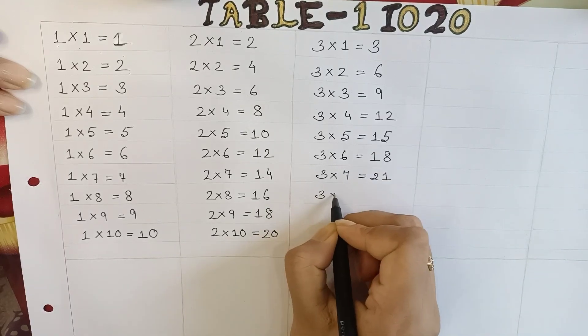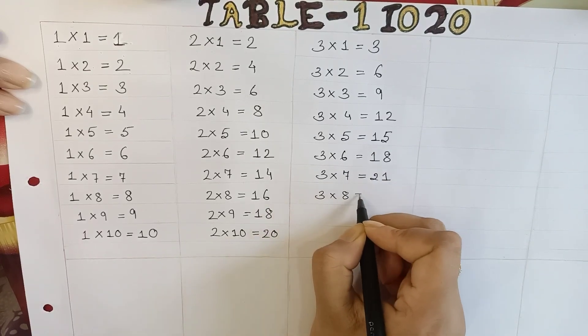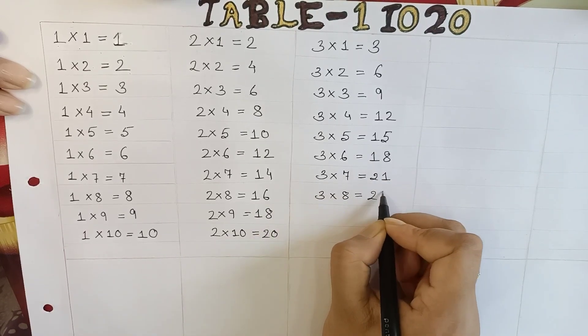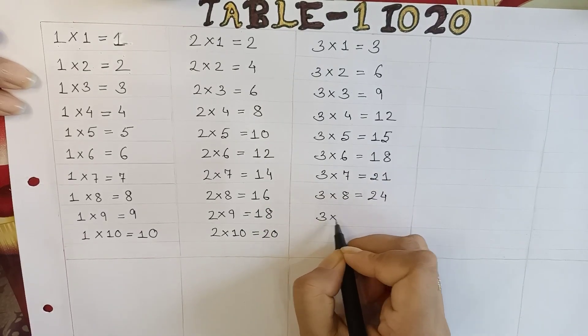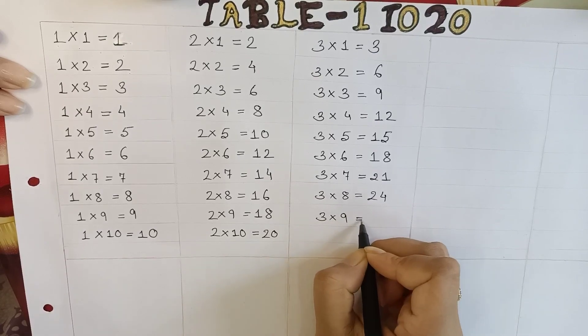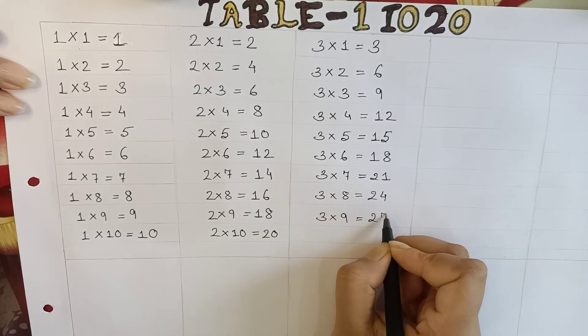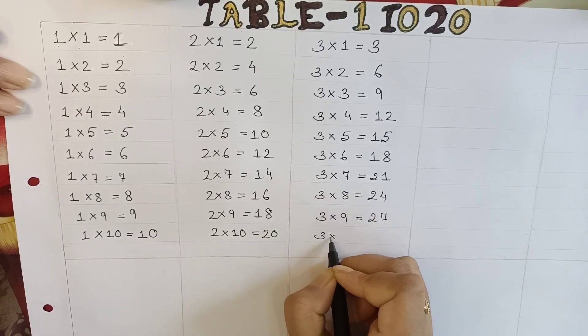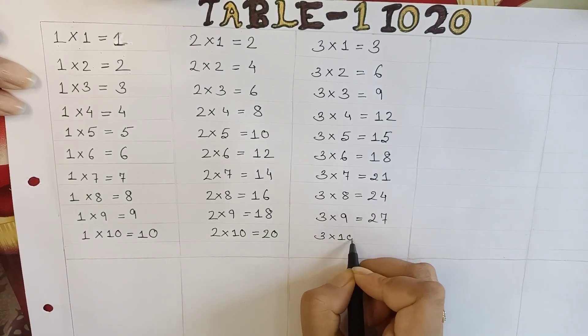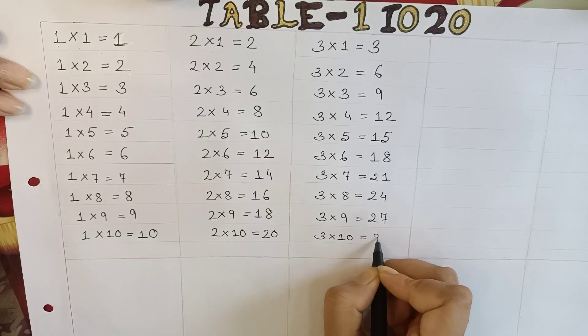3 x 8 is equal to 24. 3 x 9 is equal to 27. 3 x 10 is equal to 30.